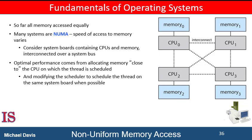Managing which page frames are stored at which locations can significantly affect performance in NUMA systems. If we treat memory as uniform in such a system, CPUs may wait significantly longer for memory access than if we modify memory allocation routines to take NUMA into account. The goal is to have memory frames allocated as close as possible to the CPU on which the process is running. The definition of close is minimum latency, which usually means on the same system board as the CPU. So, when a process incurs a page fault, a NUMA-aware virtual memory system will allocate that process a frame as close as possible to the CPU on which the process is running.